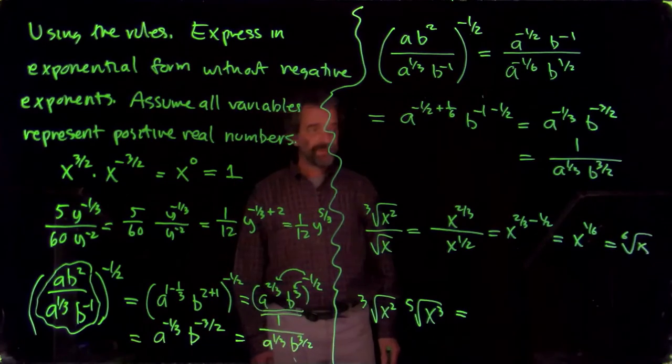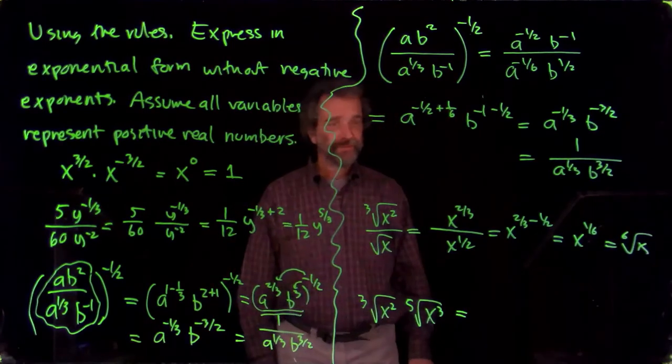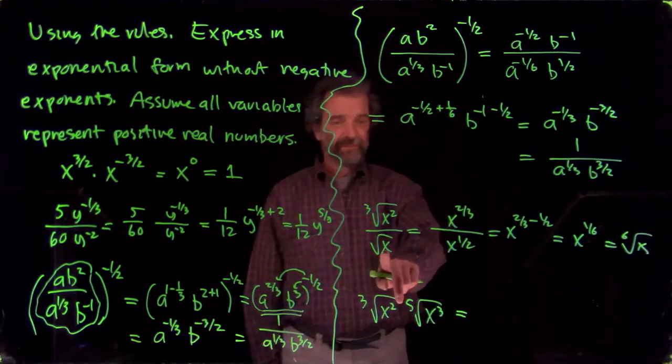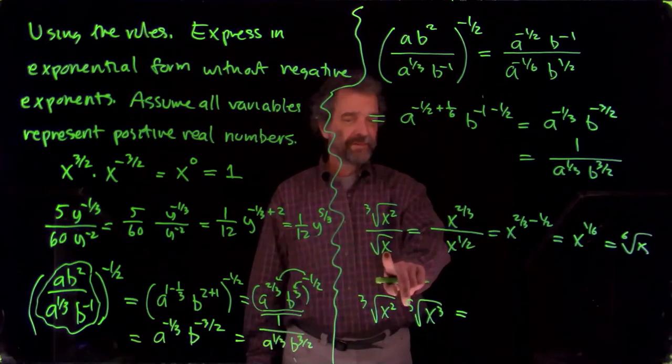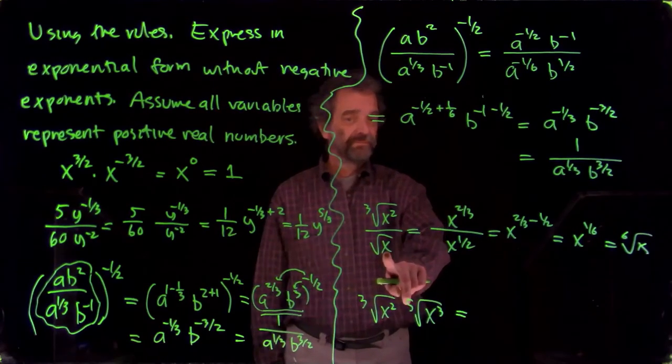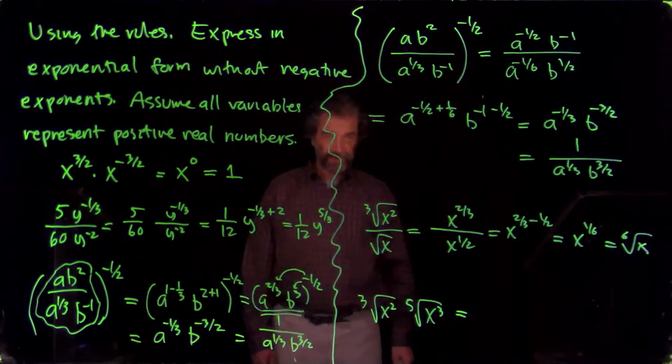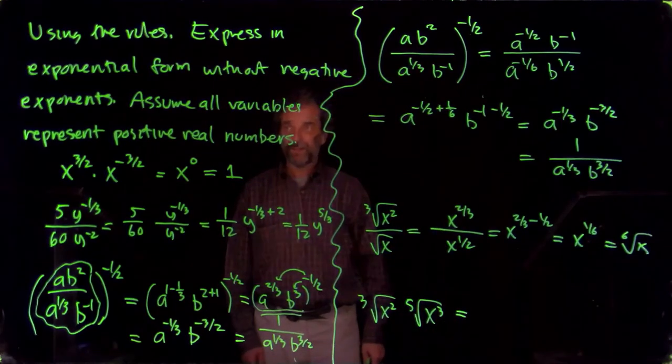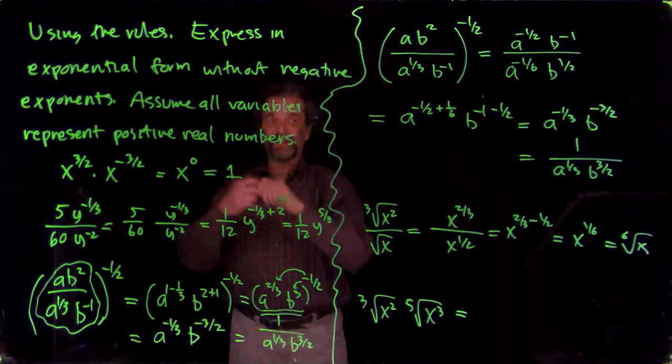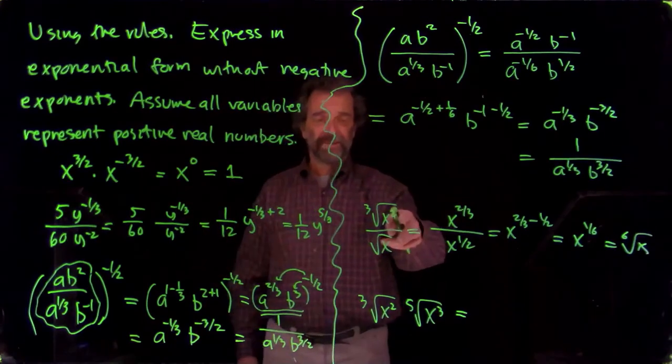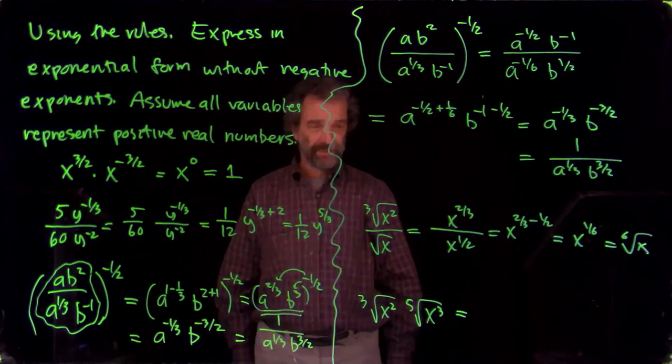But normally I'd be a little bit worried about using all those rules. But x can't be negative. Otherwise, we can't take the square root. So everything is good. Either the variables can't be negative. So I assume they represent all positive real numbers. Even if they didn't, this one would be defined unless x was a positive number.